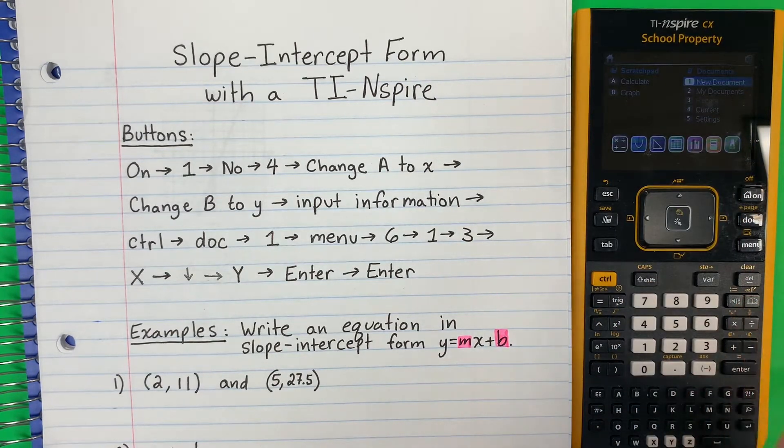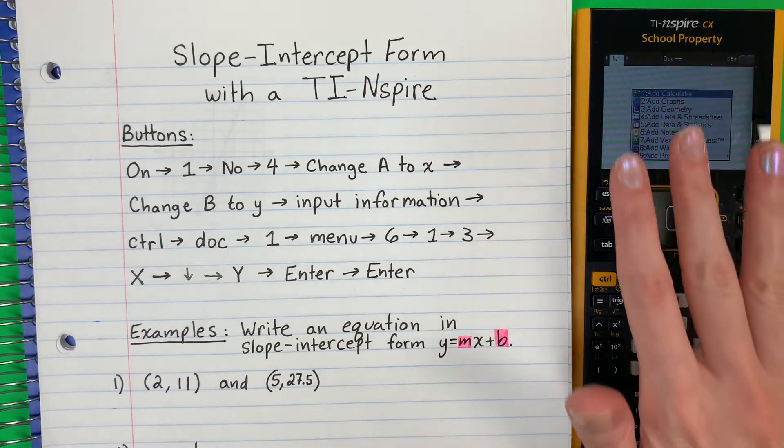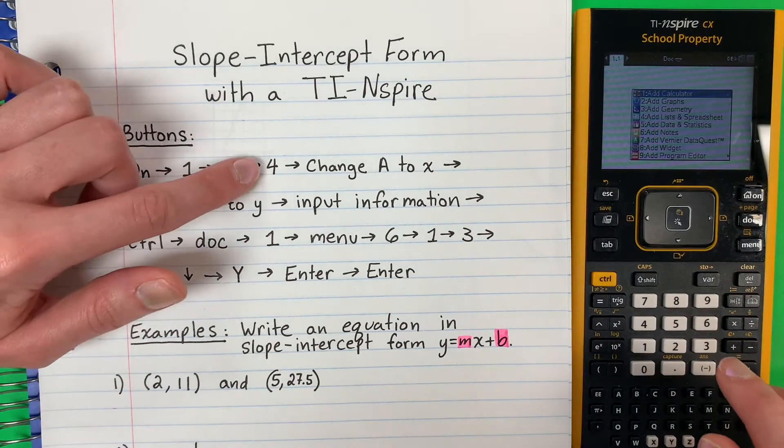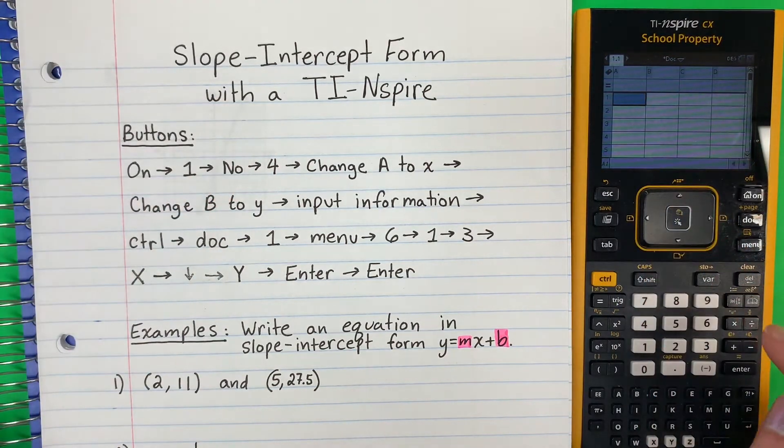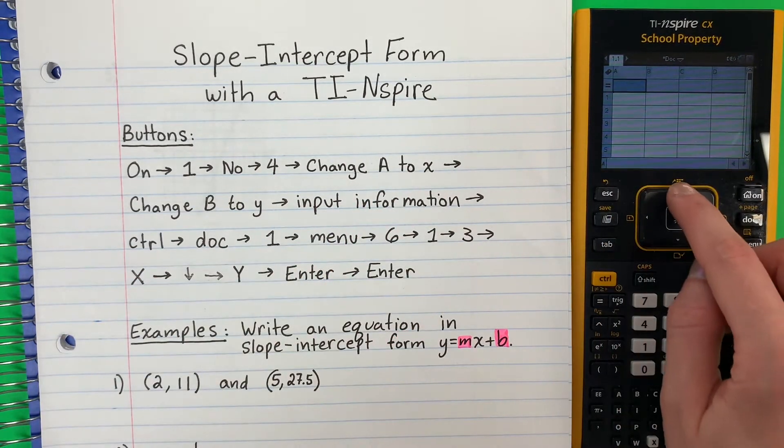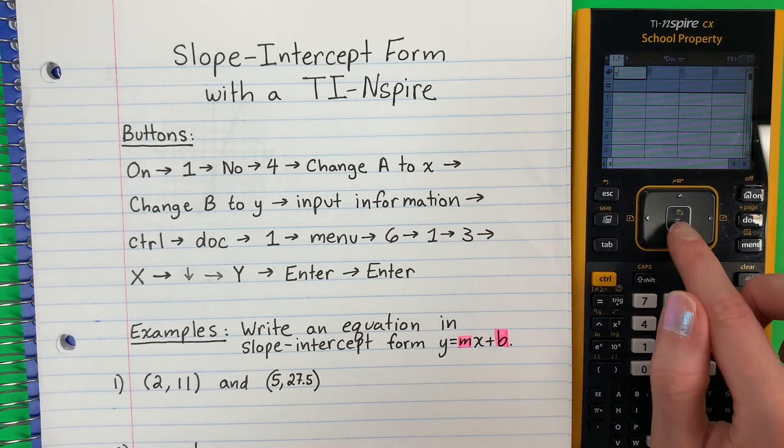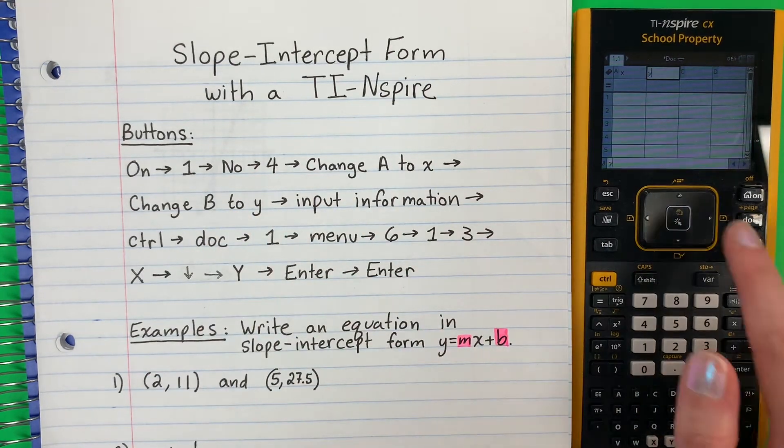Go ahead and push 1, no, after you've turned on your calculator. We're going to go ahead and go to 4. We're going to have a little list here, a little table. And we're going to change a to x. Vamos a cambiar a por x. And then we're going to change b to y. So go ahead and put y here. And then go back to this area here.